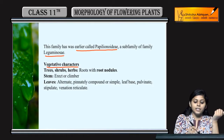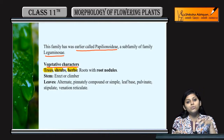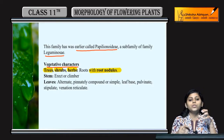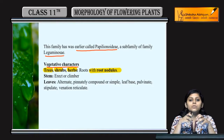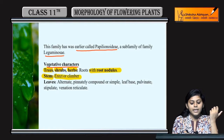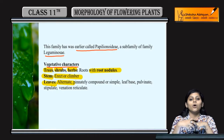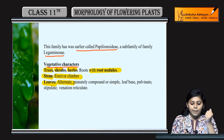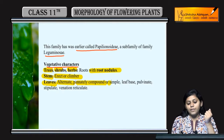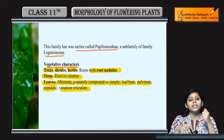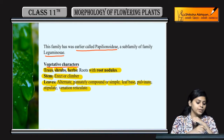Vegetative characters ki baat karein toh trees, shrubs, herbs aur vines mein hota hai. Unki jo roots hoti hain wo root nodules mein convert hoti hain - means unki roots mein root nodules hote hain. Stem is erect or climber type ki hoti hai. Leaves alternate hoti hain - pinnately compound ya phir simple leaves hoti hain. Leaf base pulvinate, stipulate aur reticulate venation hoti hai.